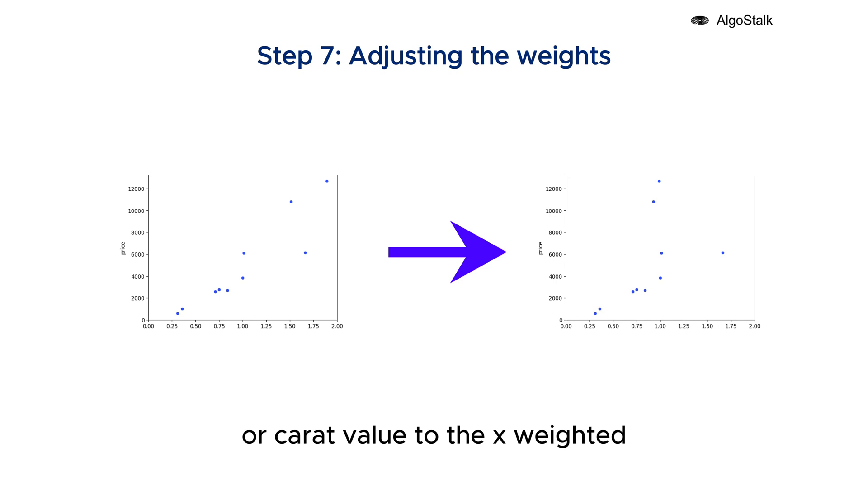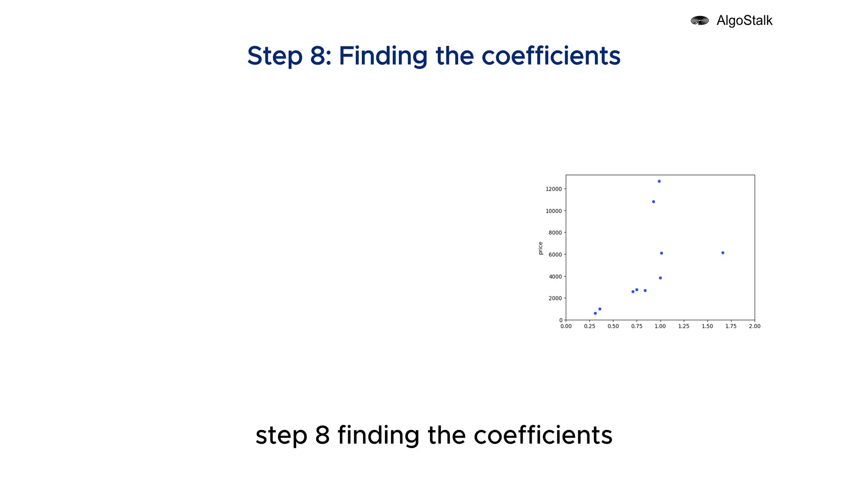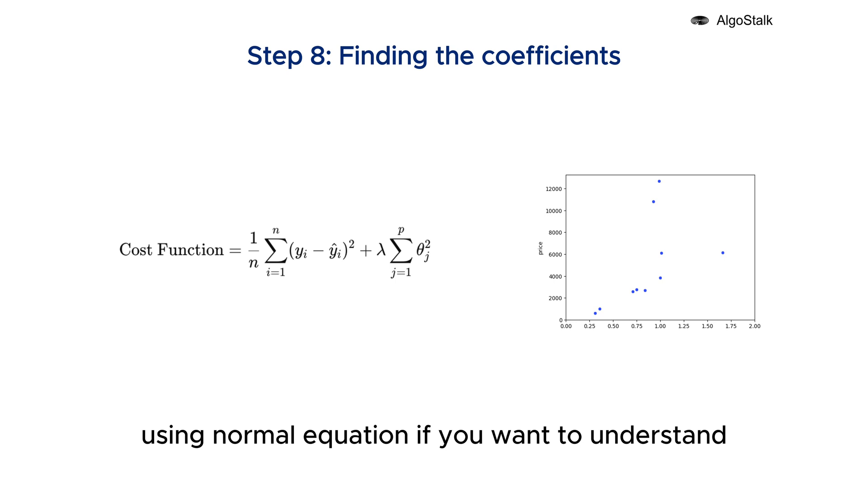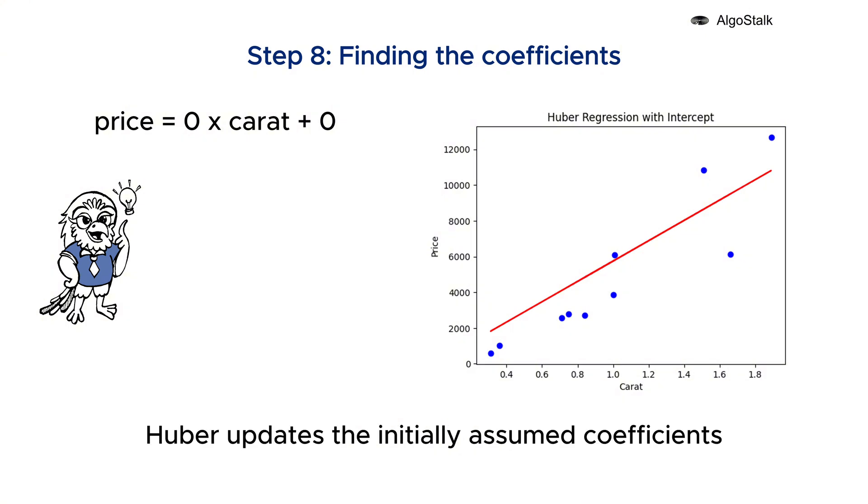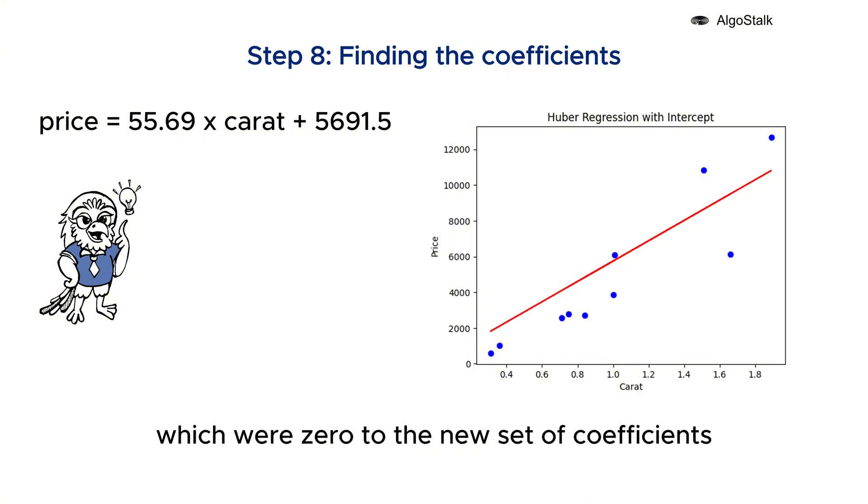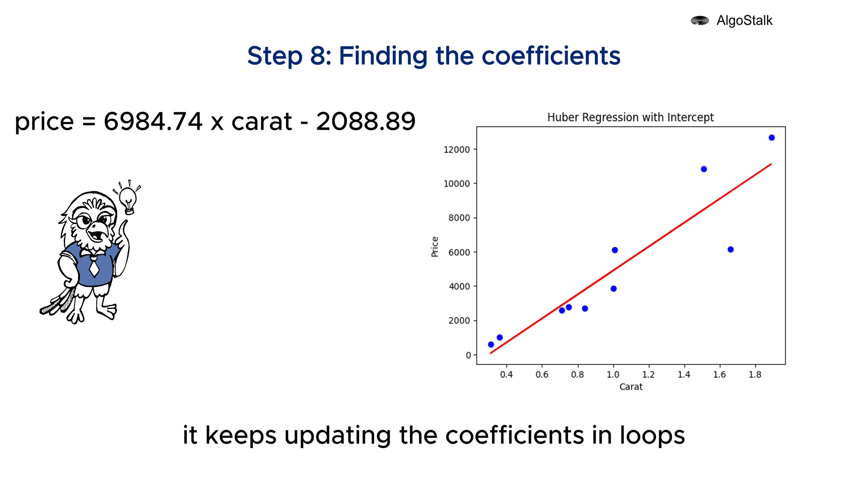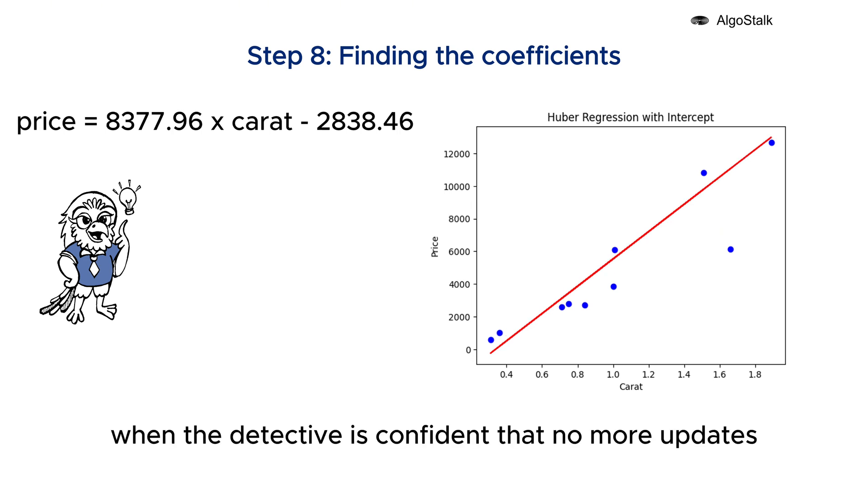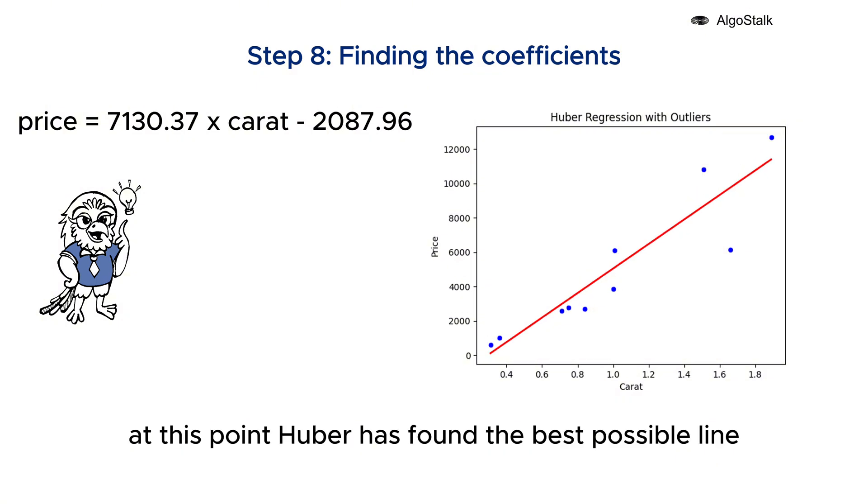Step eight: finding the coefficients. Now Huber uses regularization techniques, Ridge by default, to find the best optimized coefficients using normal equation. If you want to understand the regularization techniques in detail, check out the link in the description. Finally, Huber updates the initially assumed coefficients, which were zero, to the new set of coefficients. It keeps updating the coefficients in loops until the changes are very small. When the detective is confident that no more updates are needed, we say it has converged. At this point, Huber has found the best possible line that fits the majority of clues.